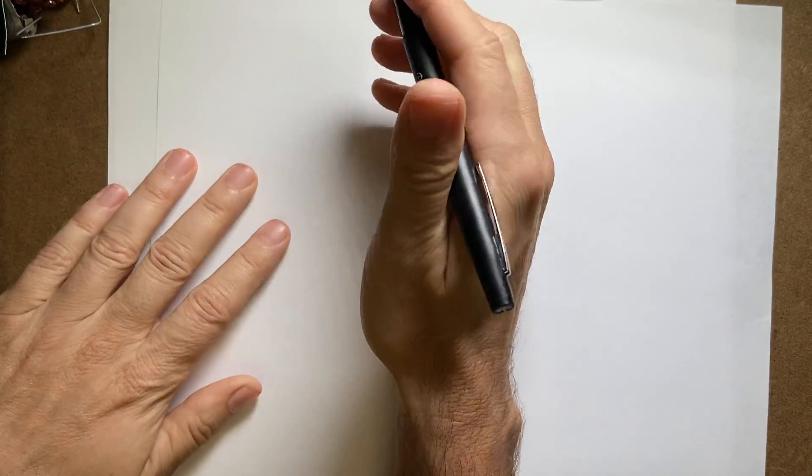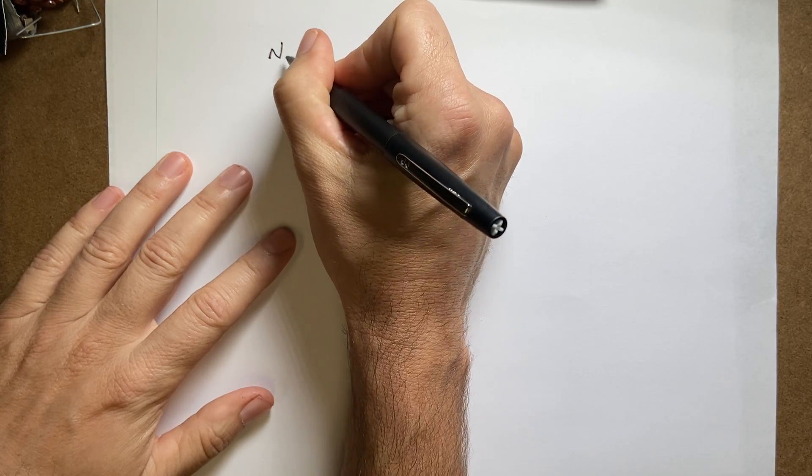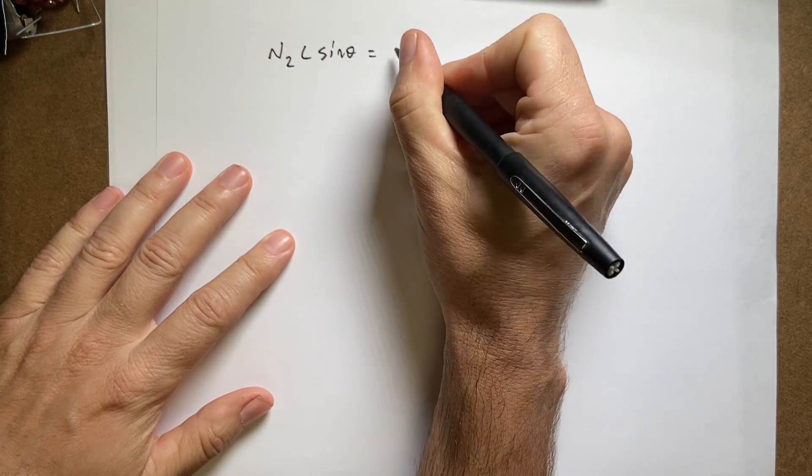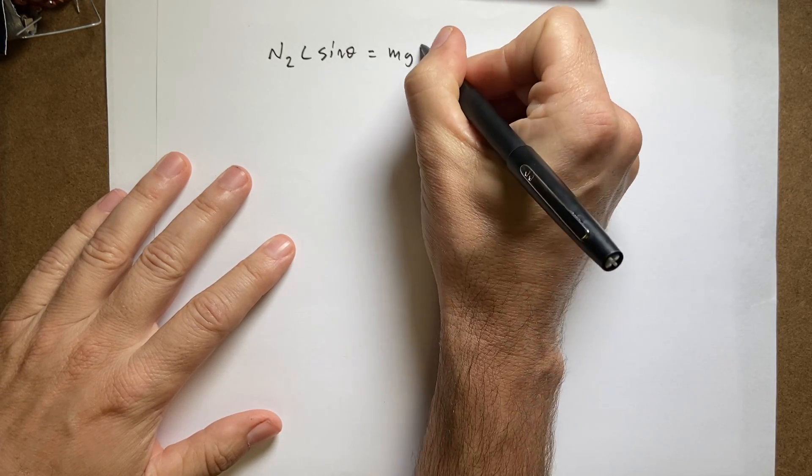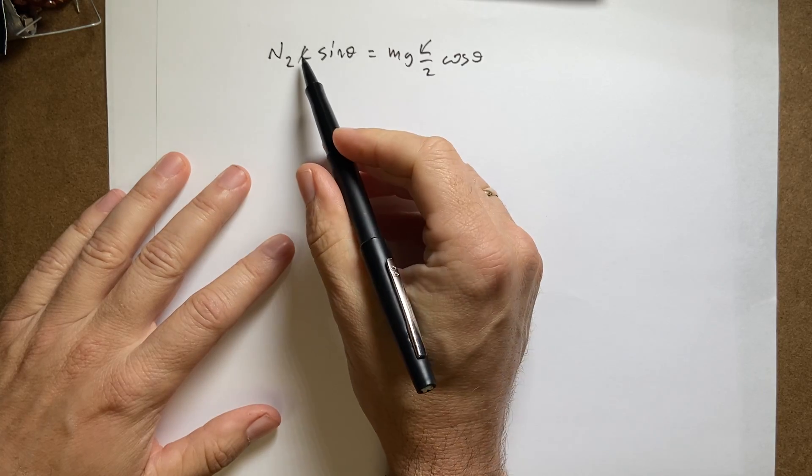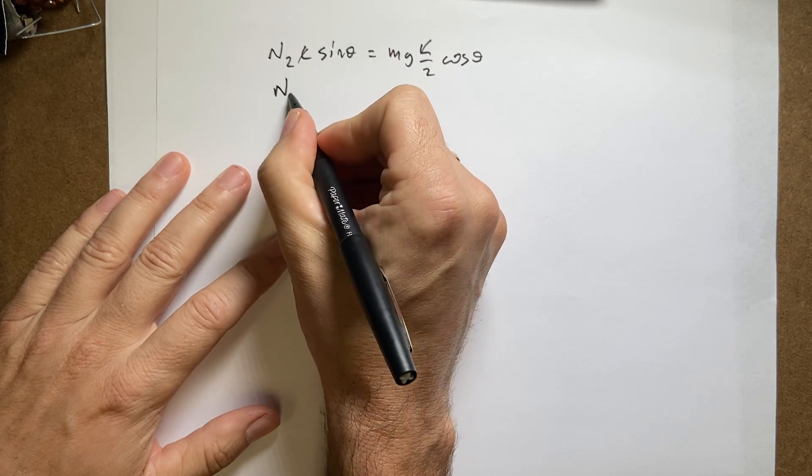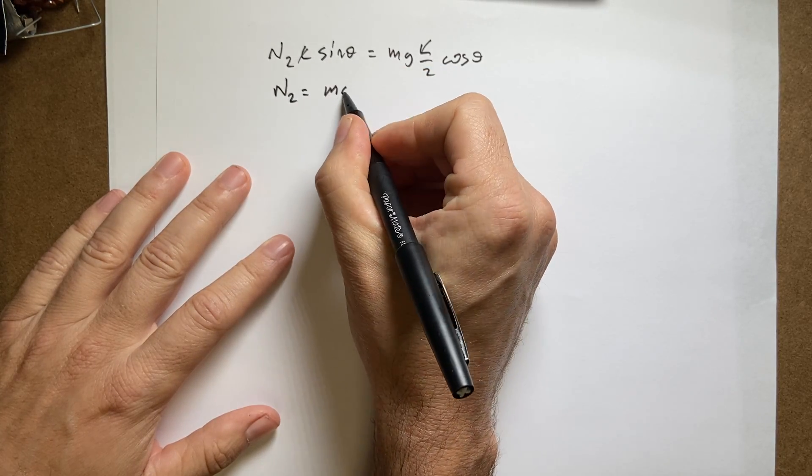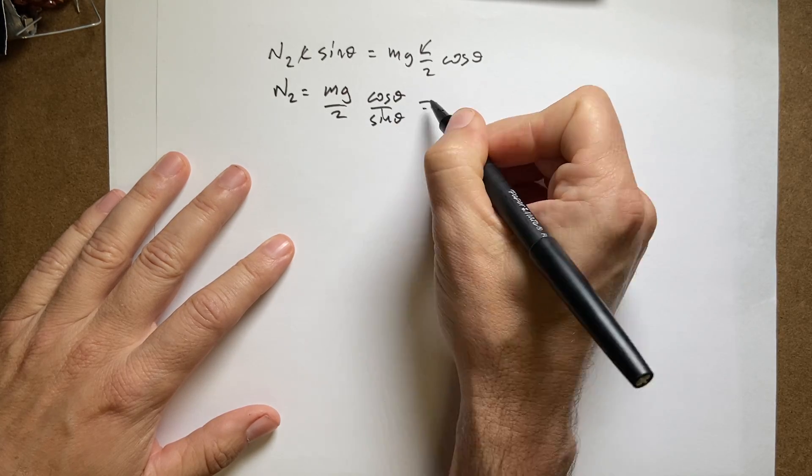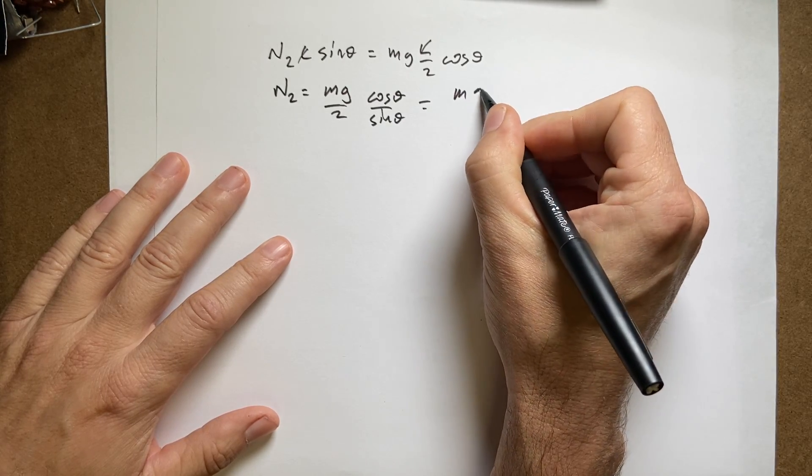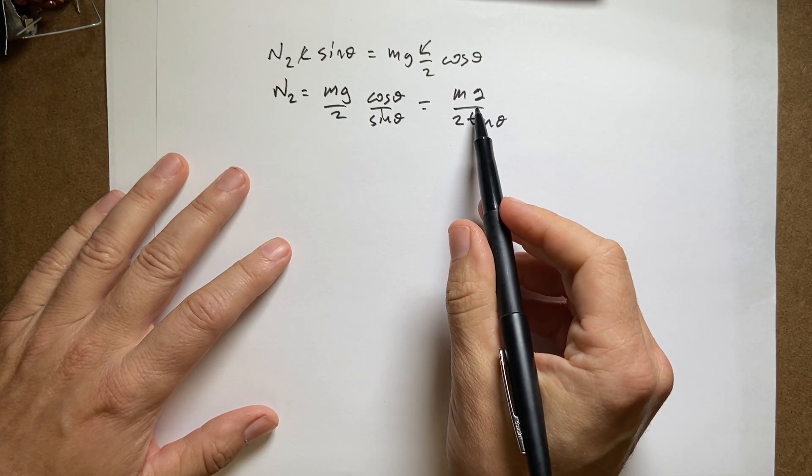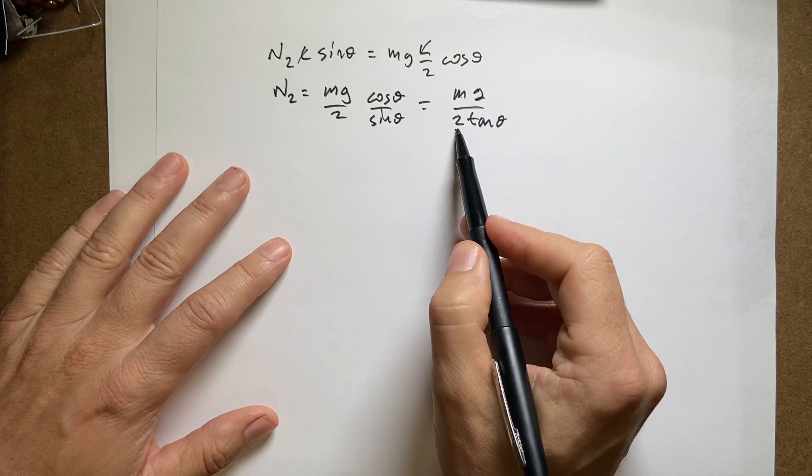So I'm going to solve that for N2. I have N2 L sine theta equals mg L over 2 cosine theta. I just moved it to the other side. The L's cancel. Divide by sine theta. I get N2 equals mg over 2 cosine theta over sine theta. So this is mg over 2 tangent theta. And I just have a number for that, right? That's just a number. Because I know M, I know G, I know 2, and I know theta.